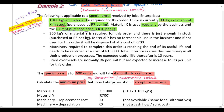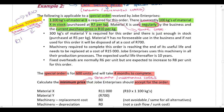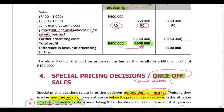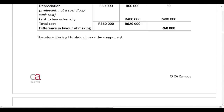However, if the material is in stock, we cannot use the original cost of 7 Rand per kilogram — that is a sunk cost, money already spent in the past. Sunk costs are not relevant; we are only interested in future cash flows. Because this material is used regularly by the business, we use the current purchase price as the relevant cost.